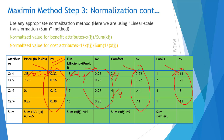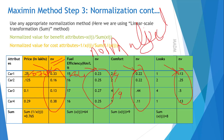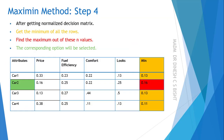We have now calculated normalized values for all attributes — looks, comfort, fuel efficiency, and price. We have obtained the normalized decision matrix.